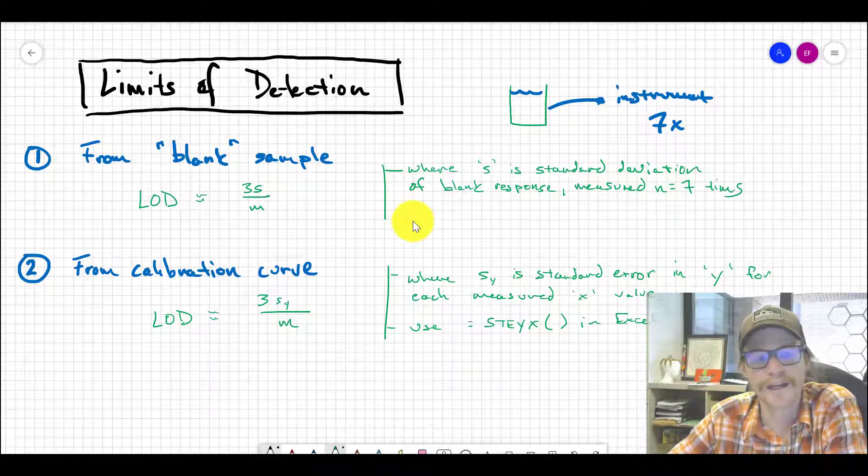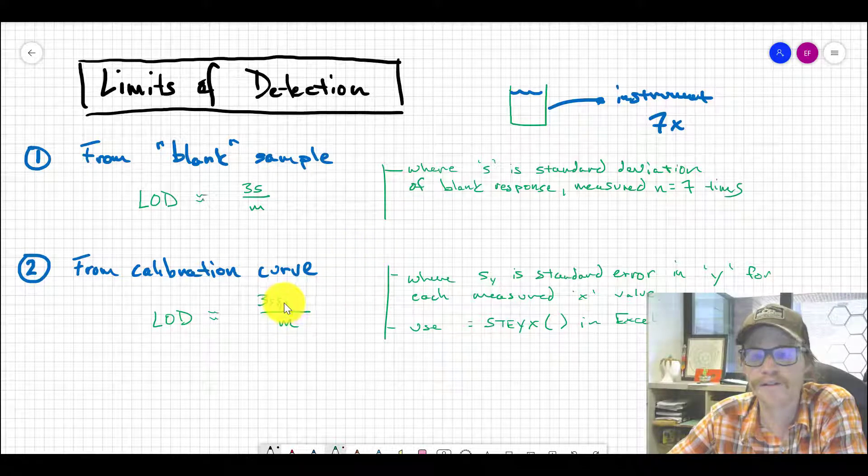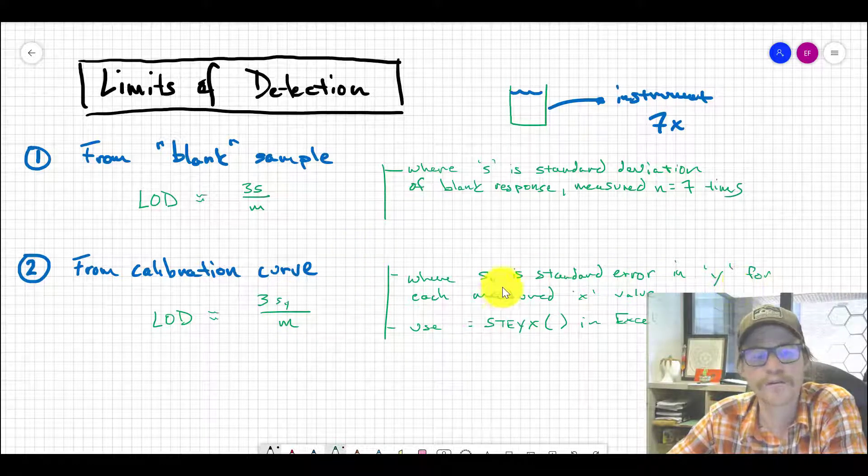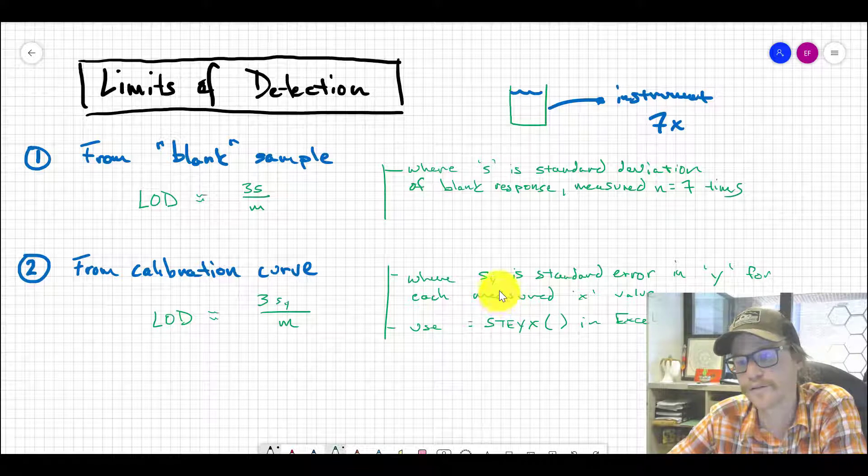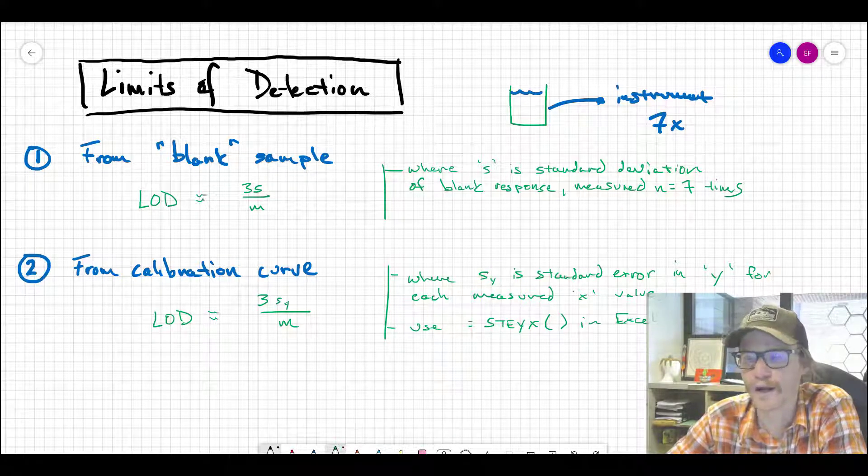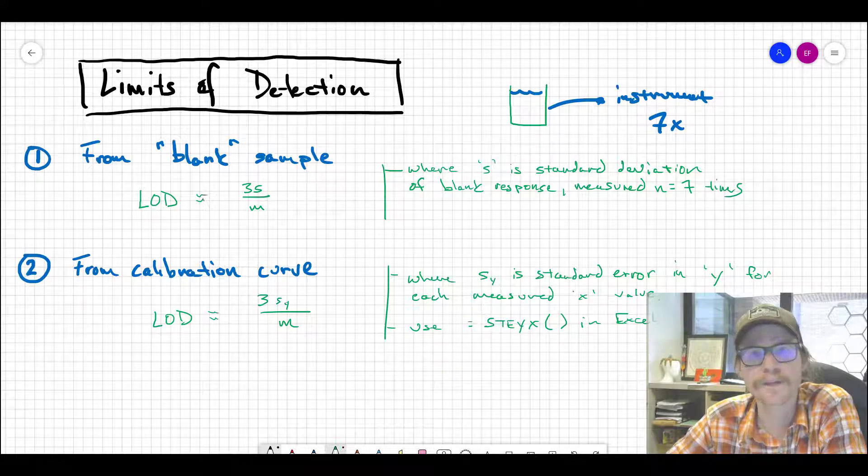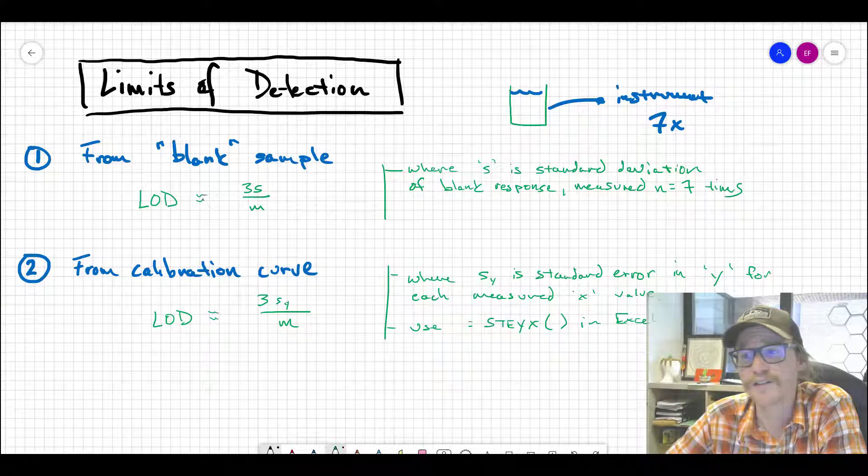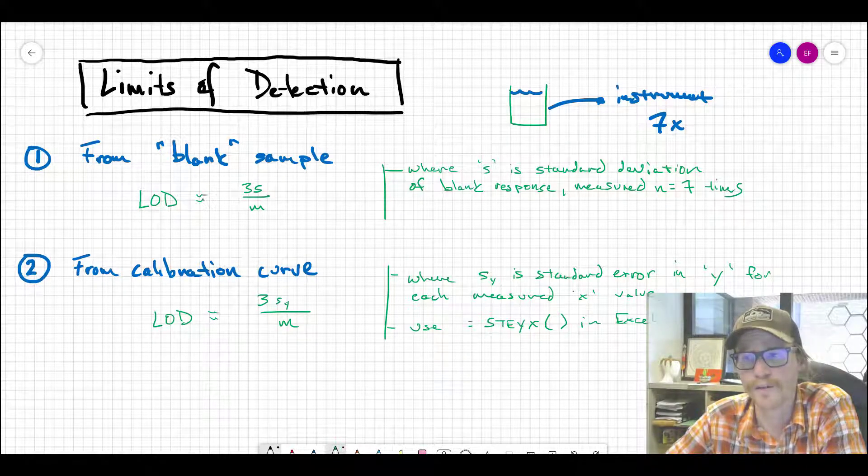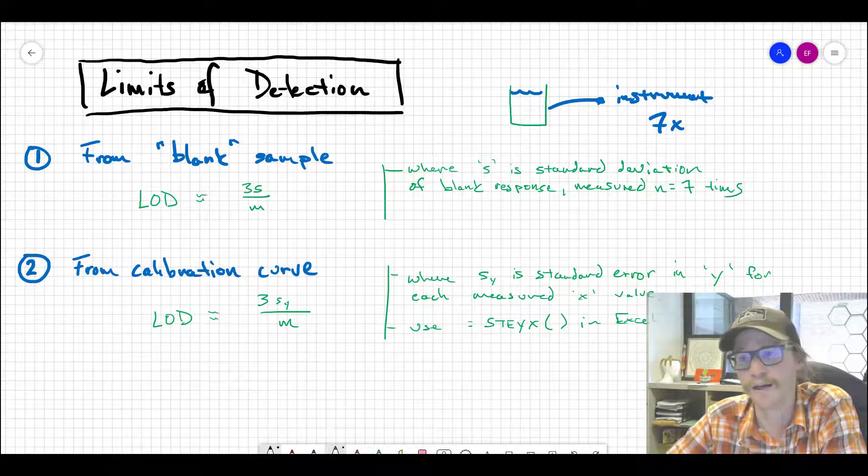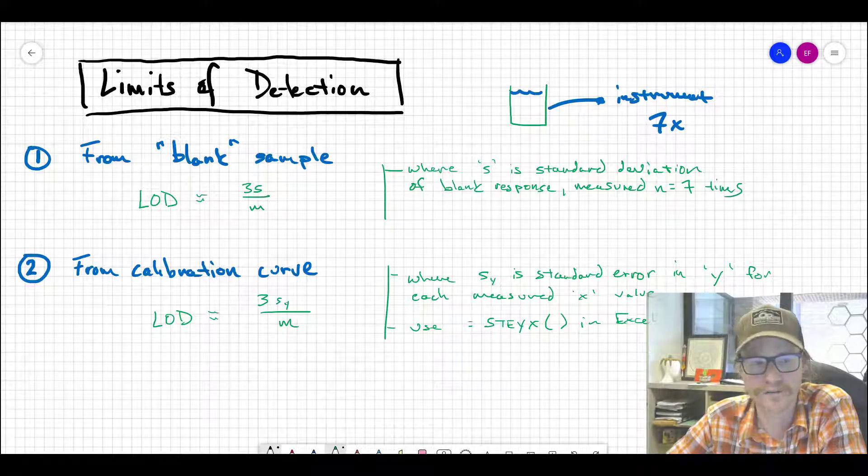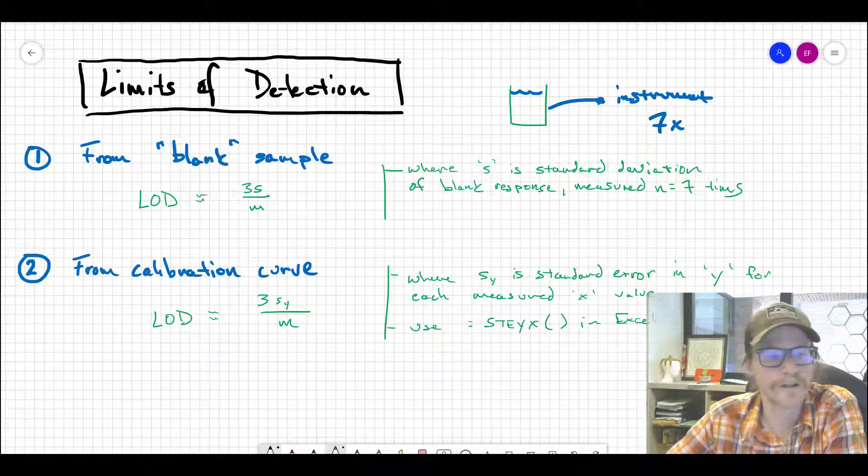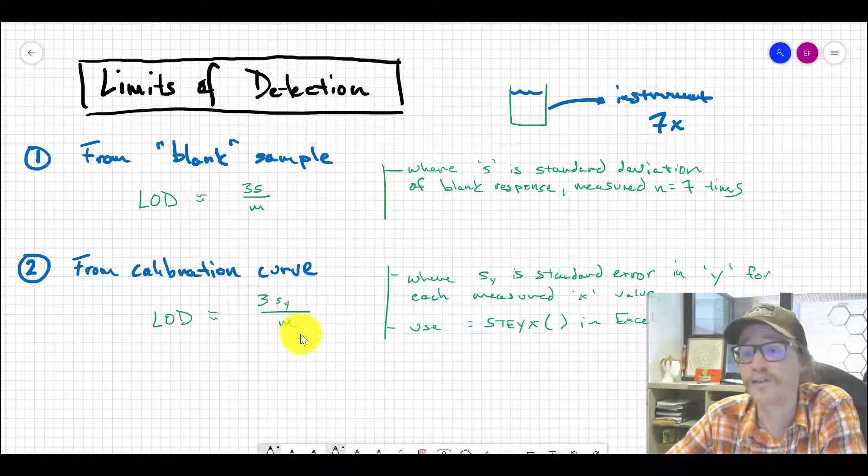From the calibration curve data, you compute the standard error in y for each of the measured x values—these are the response values for your standards. If you measured five standards in your instrument, you'd take the standard error in y, which you can calculate in Excel. That's your Sy, so three times that value divided by...